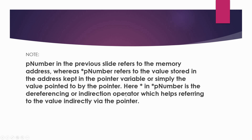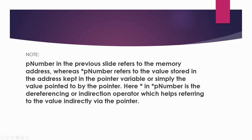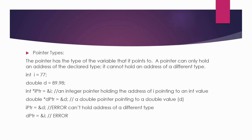To summarize: 'p_number' (without the asterisk) refers to the memory address itself. '*p_number' (with the asterisk — the dereferencing or indirection operator) refers to the value stored at that address — the value pointed to by the pointer. The asterisk in '*p_number' is the dereferencing operator, which helps refer to the value indirectly via the pointer.